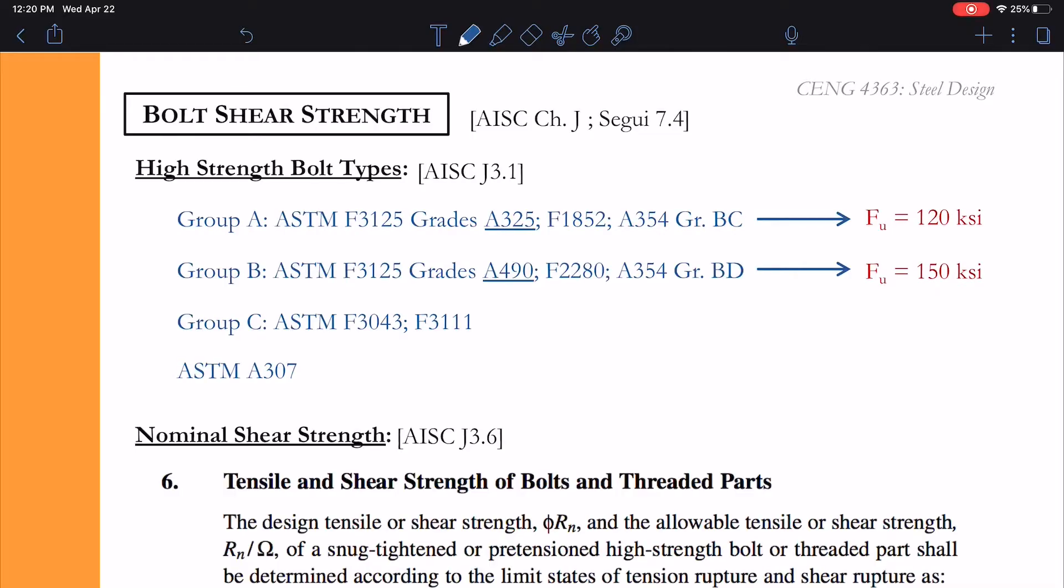So let's define how we calculate bolt shear strength. First we need to figure out which bolts we have. We often refer to A325 bolts or A490 bolts, and these are group A and group B respectively. Bolt technology is one of the things that is continuing to advance in steel construction. We see that more grades and more groups of bolts have been added to the specification as we move through the years.